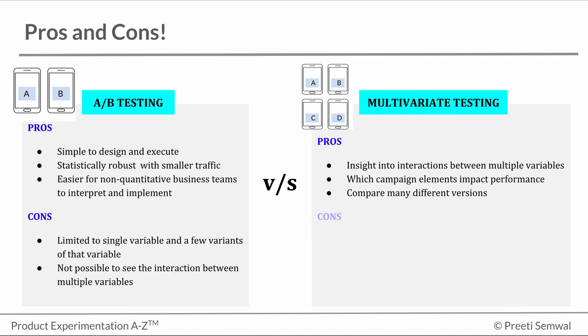Cons: In general, multivariate tests require more traffic than A-B testing. They can quickly become unfeasible to manage with too many combinations, even for high traffic campaigns. They can take relatively more time to get up and running.